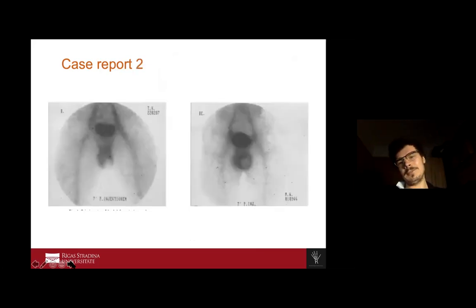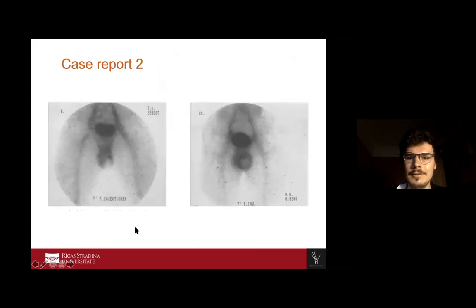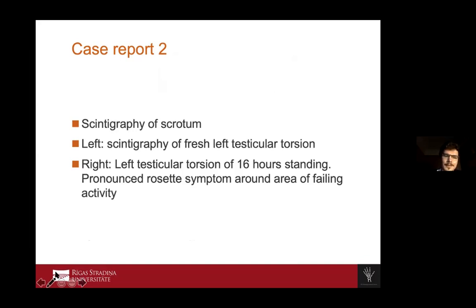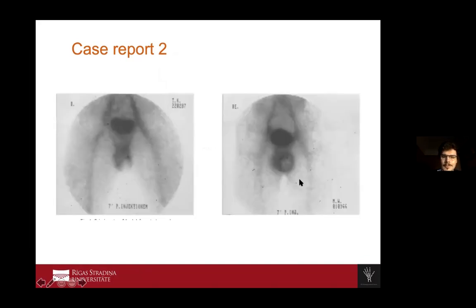Case 2: This is scintigraphy of the scrotum. In both images of the scrotum, there was a testicular torsion — two different cases, but always the left scrotum. We see a negative picture because, due to the torsion, there is no tracer in the left scrotum. We also see a slight spot on the left scrotum in the second case.